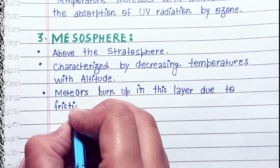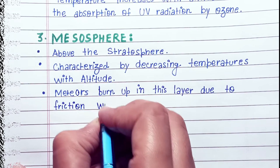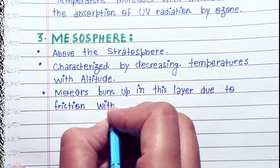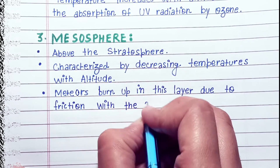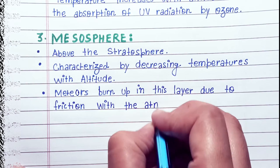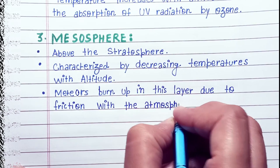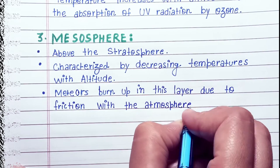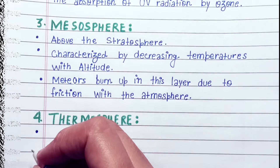Mesosphere — above the stratosphere, characterized by decreasing temperatures with altitude. Meteors burn up in this layer due to friction with the atmosphere.